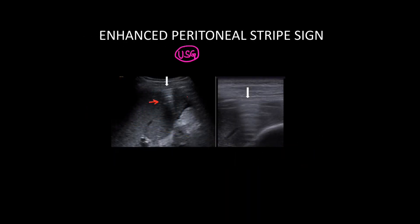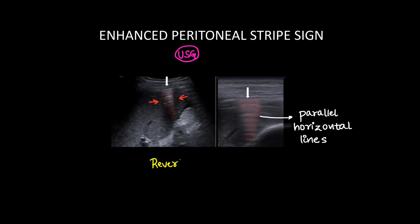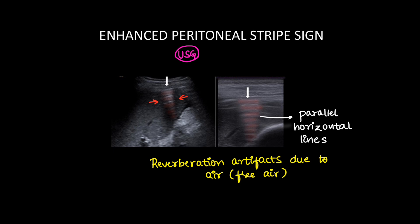That's all for the x-ray signs. Next we have a sign on ultrasound. We can see parallel horizontal echogenic lines just underneath the probe. This is because of free air collecting below the peritoneum, and these are reverberation artifacts due to the free air, known as the enhanced peritoneal stripe sign.